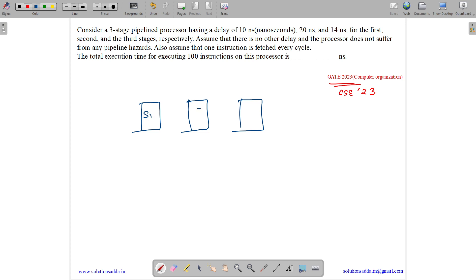Let us assume stage 1, stage 2 and stage 3 with a delay of 10 ns, 20 ns and 40 ns for the first, second and the third stage respectively. Assume that there are no other delay and the processor does not suffer from any hazards. Also assume that 1 instruction is passed every cycle.